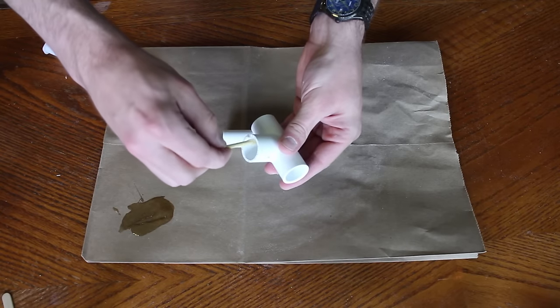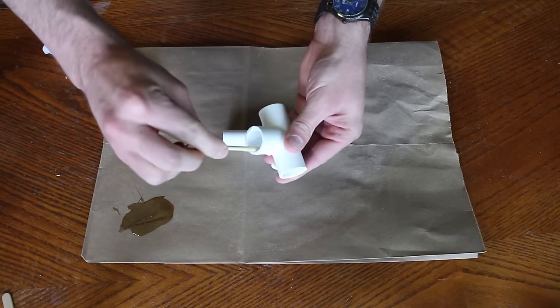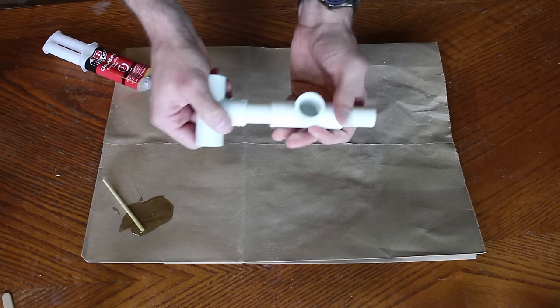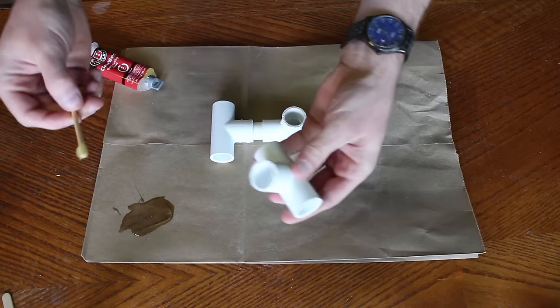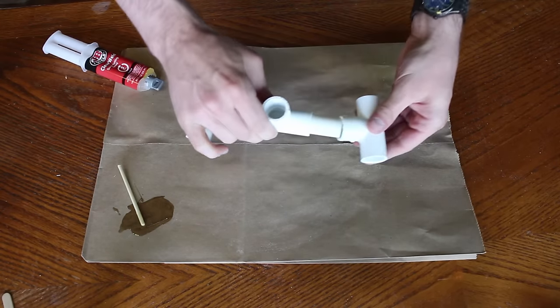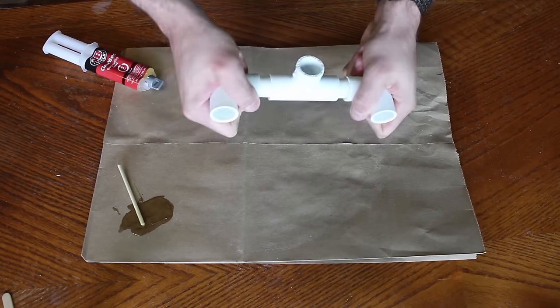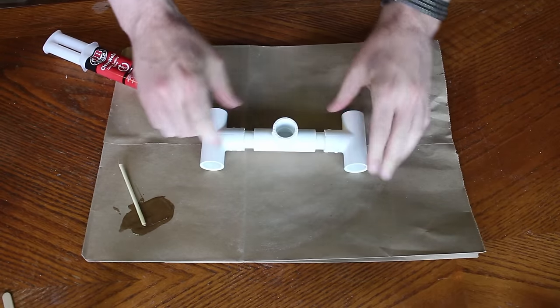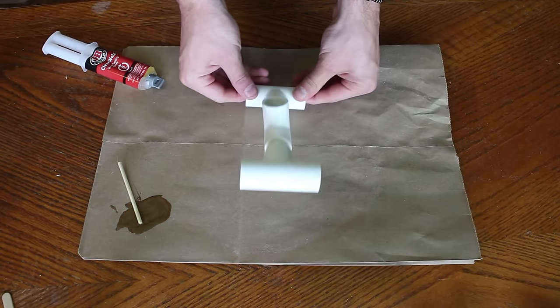Next we'll place some more epoxy in the middle of one of the other tees and press it in place. Then we'll do the same for the 3rd tee. Press it against the table and it'll straighten it out. Make sure it's a little bit crooked like this.